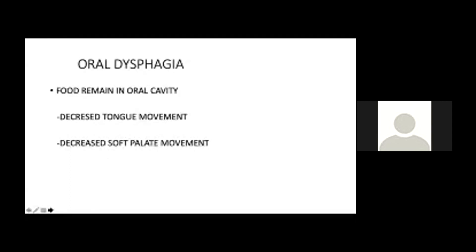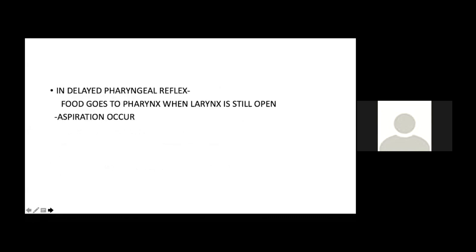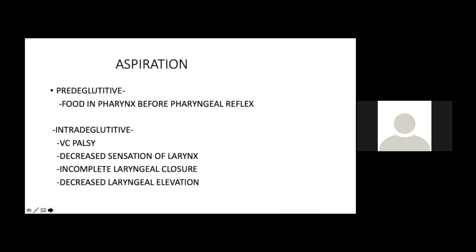In oropharyngeal dysphagia, decreased tongue base movement causes food to remain in the vallecula or upper pharynx. Decreased constrictor muscle function causes food to stick all over the pharynx and later aspiration occurs. Decreased tonsillar or pharyngeal sensation — whether from stroke or post-carcinoma resection — delays the pharyngeal swallowing phase. If the pharyngeal reflex is delayed, food goes to the pharynx while the larynx is still open, causing aspiration.